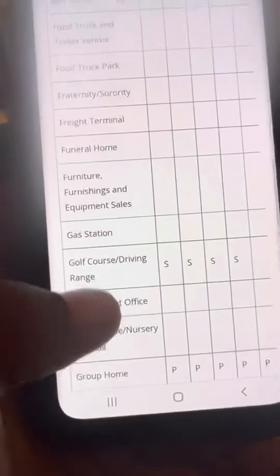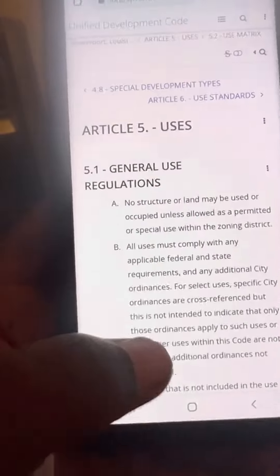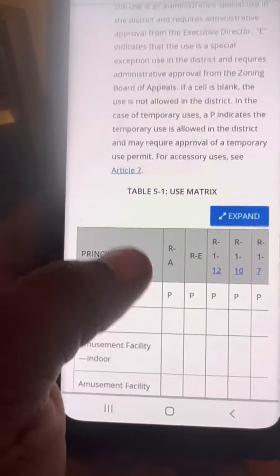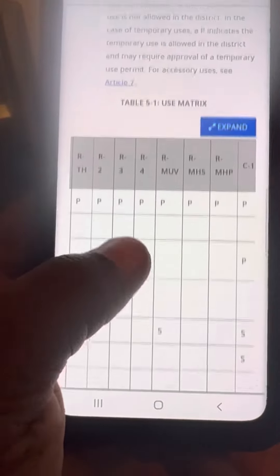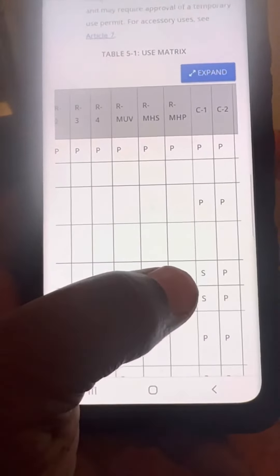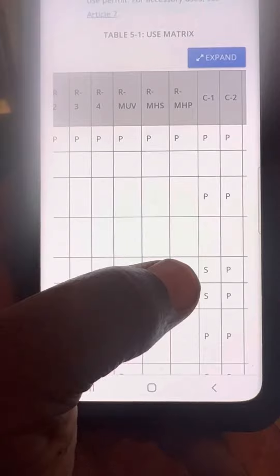What's the S stand for? The S stands for special use. If it's got an S under there, that's a special use permit. You got to pay six hundred dollars for it.